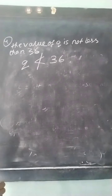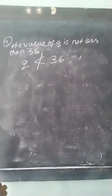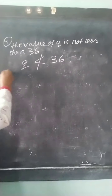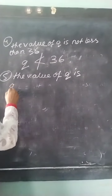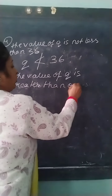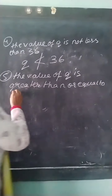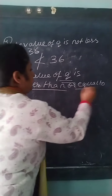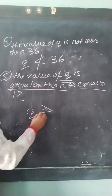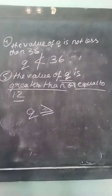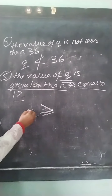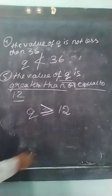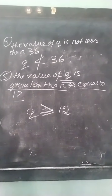Sum number 5: the value of Q is greater than or equal to 12. Greater than or equal to means you place the equal to sign under the greater than sign. So we write Q ≥ 12. The value of Q is greater than or equal to 12. This is how you will solve the sums.